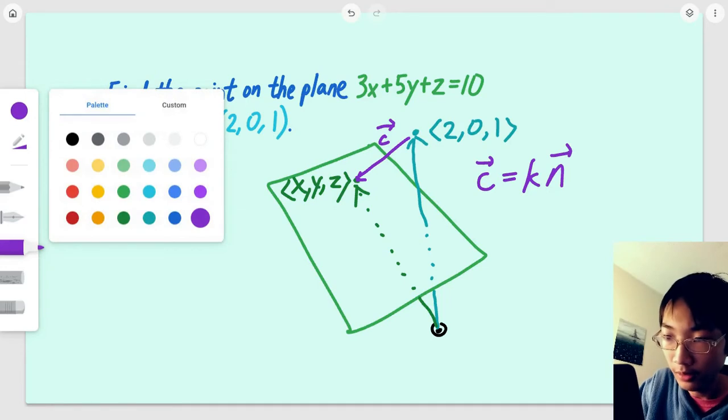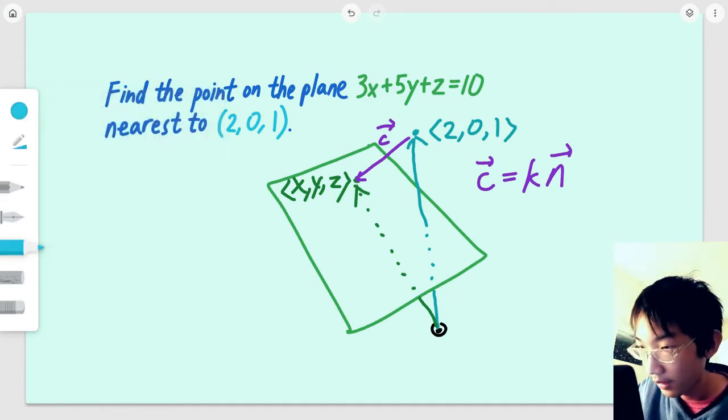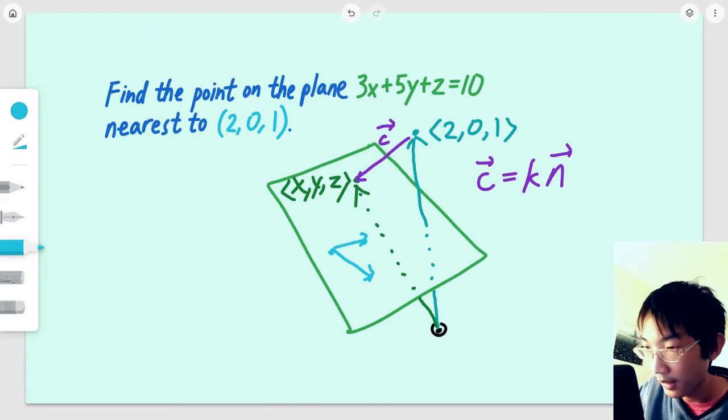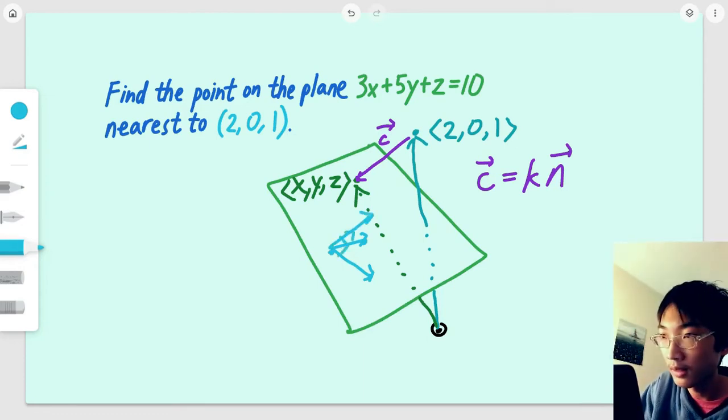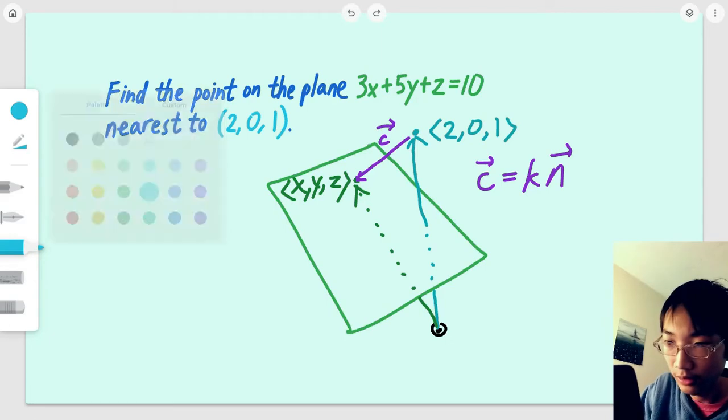Well, you might think about picking, say, three points on the plane which satisfy this equation, drawing two vectors from the points, and cross-multiplying them to get the normal vector. Now, that is going to take some time. So, there is actually a simpler approach.